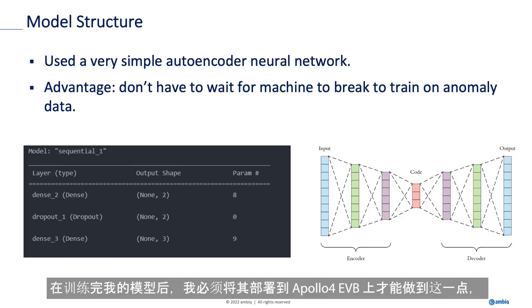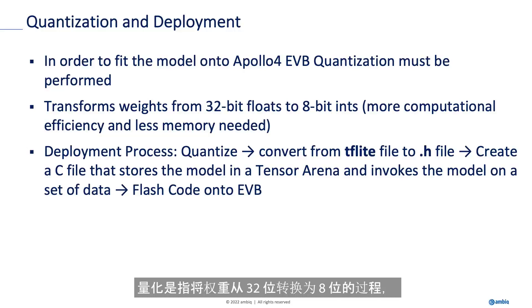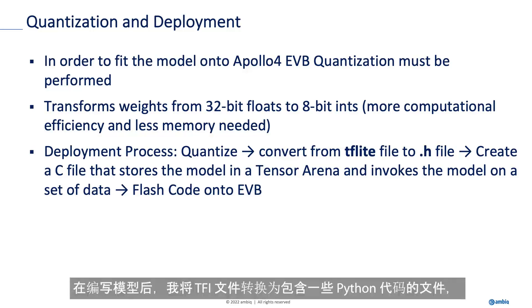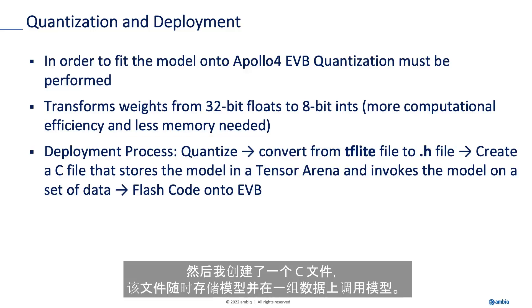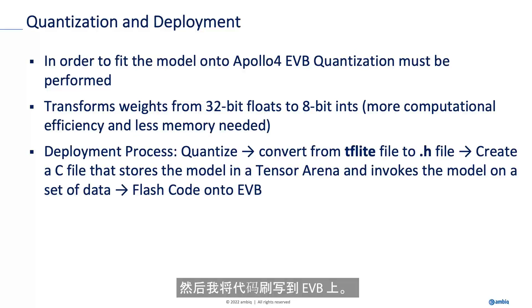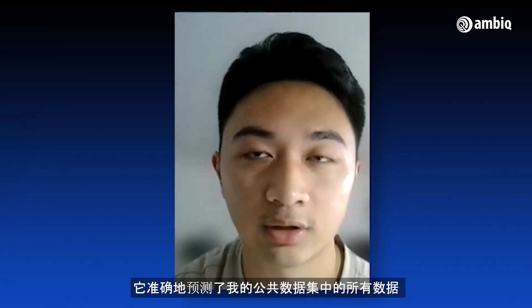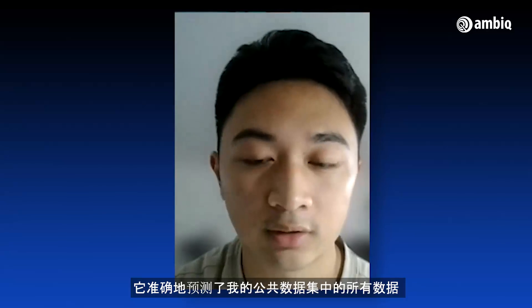After training my model, I had to deploy it onto the Apollo 4 EVB. To do that, I first had to quantize my model. Quantization refers to transforming weights from 32-bit floats to 8-bit ints, which allows for more computational efficiency and less memory usage. After quantizing, I converted the tflite file to a .h file with Python code, then created a C file that stores the model in a tensor arena and invokes the model on a set of data. I flashed the code onto the EVB and found that my model was accurately predicting all data correctly from the public dataset.